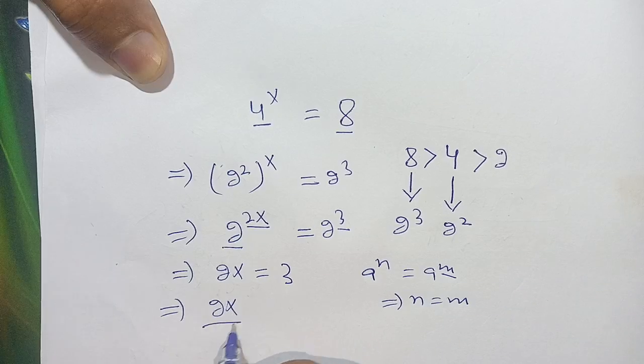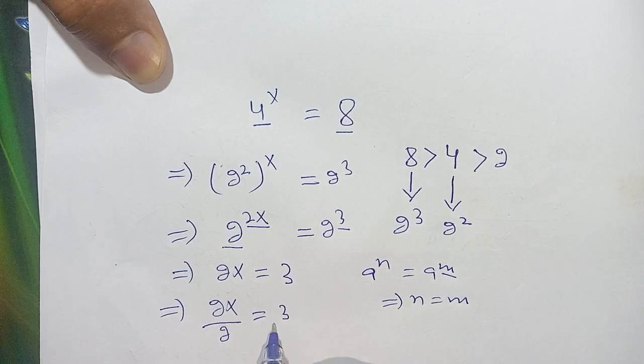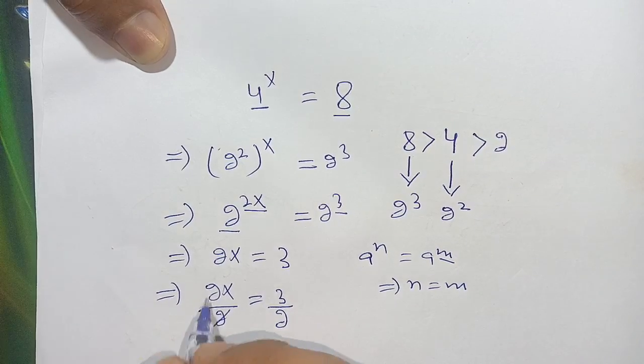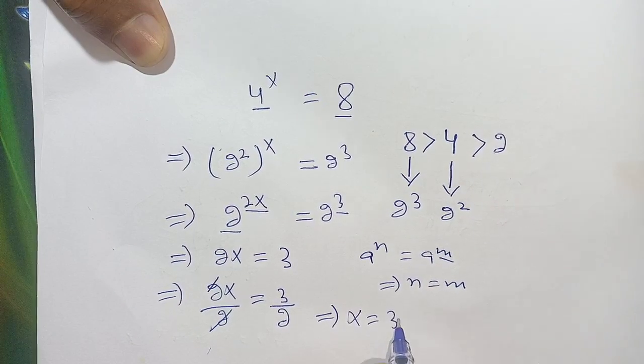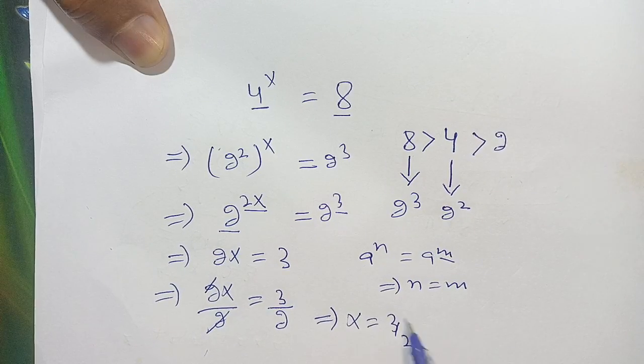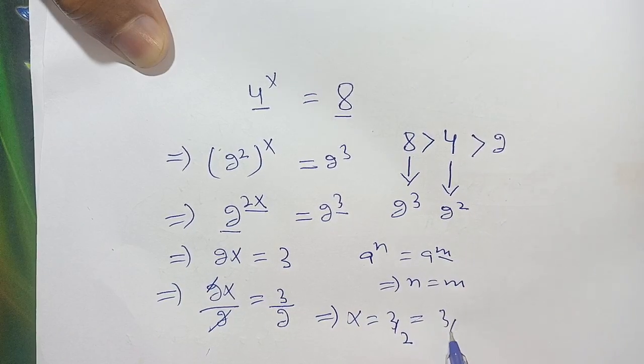The 2s cancel out and we get x = 3/2. Thus, x = 3/2 satisfies this exponential equation 4^x = 8.